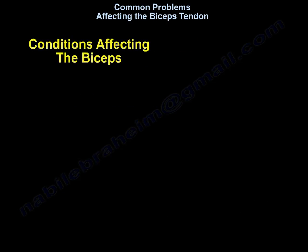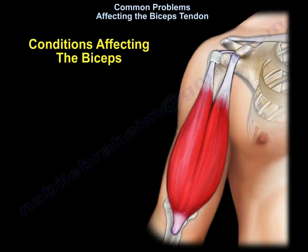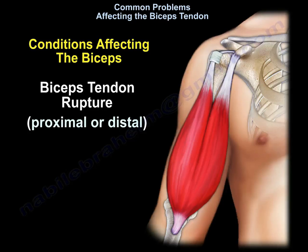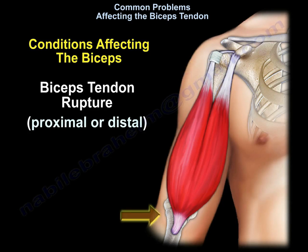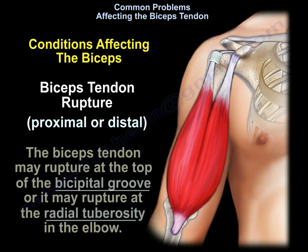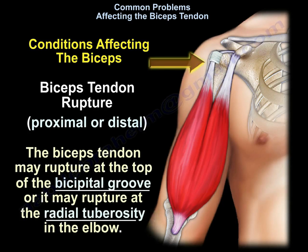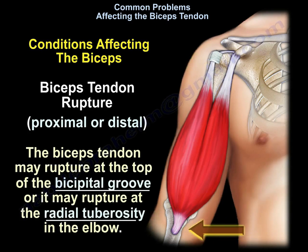There is another condition affecting the biceps: biceps tendon rupture. The rupture can be proximal or distal. The biceps tendon may rupture at the top of the bicipital groove at the shoulder area, or it may rupture at the radial tuberosity at the elbow.